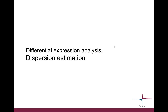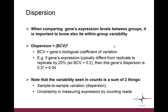Another central concept is dispersion estimation — this relates to the variability of expression values within a group or between replicates. This is important because when comparing expression levels between groups, we also need to know how noisy those groups are. The formula uses the coefficient of variation squared: if expression differs between replicates by 20%, the dispersion is 0.04.